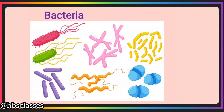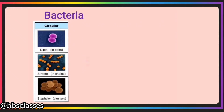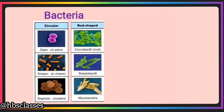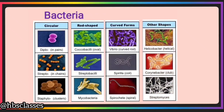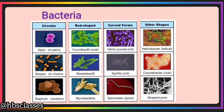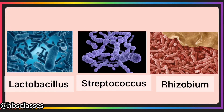Unlike viruses, bacteria feed, move, respire, and reproduce on their own. There are mainly three groups of bacteria based on their shapes: spherical or circular, rod-shaped or cylindrical, and spiral or curved shaped. Apart from these, some are of other shapes too. Lactobacillus, Streptococcus, and Rhizobium are some common examples of bacteria.